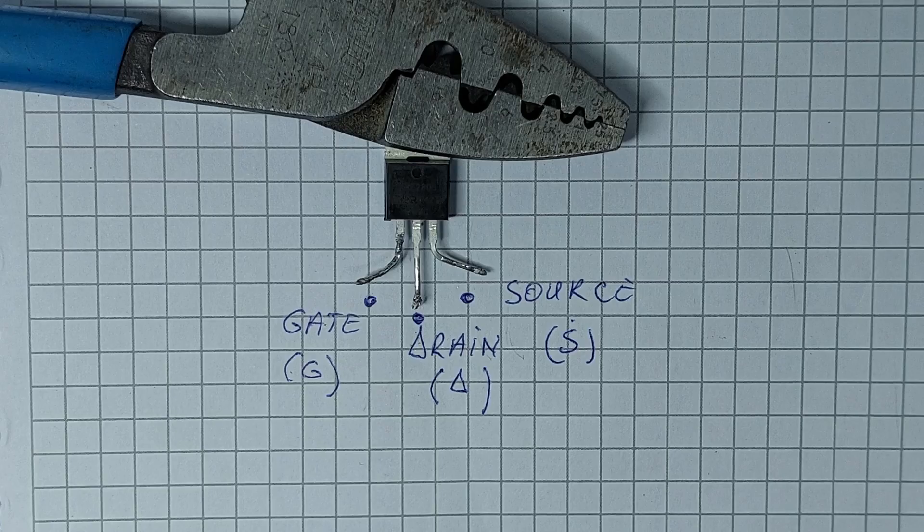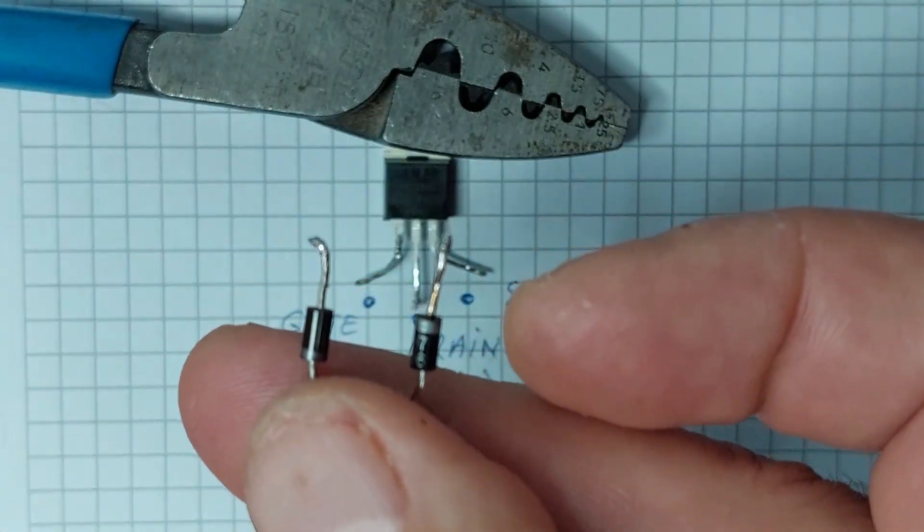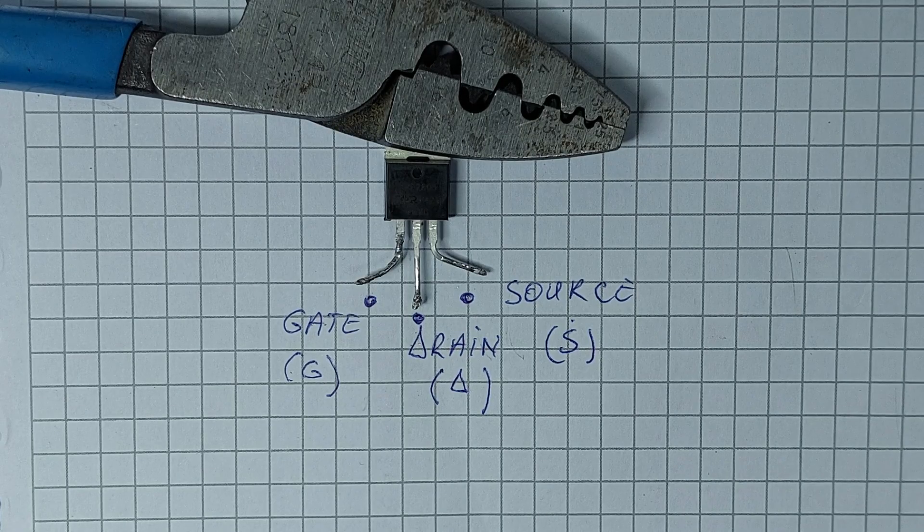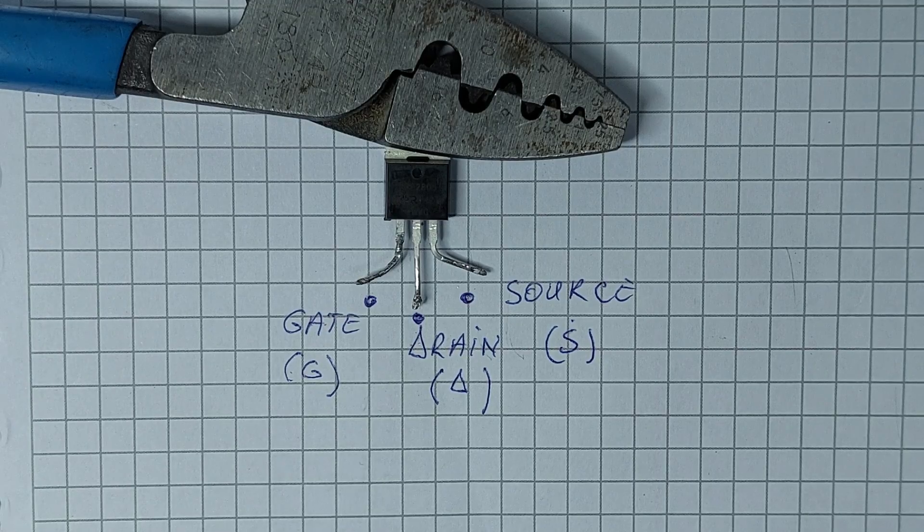Now, let's start by attaching two diodes to the gate pin of the MOSFET. I'm connecting one diode with its positive terminal to the gate, and the other with its negative terminal to the gate. This setup will allow us to test the control over the LED by touching the free end of the diodes.